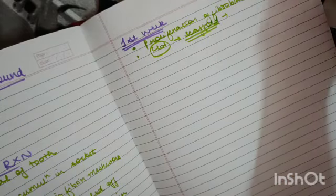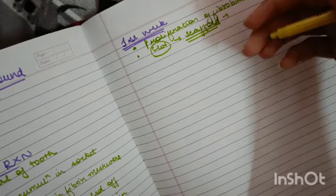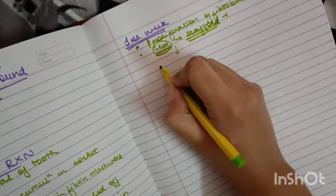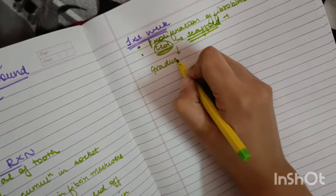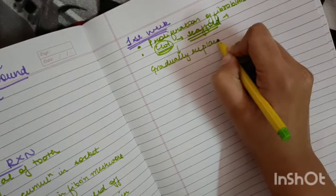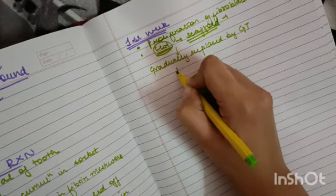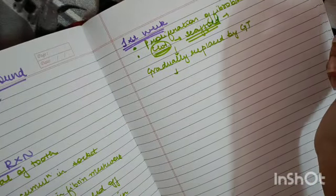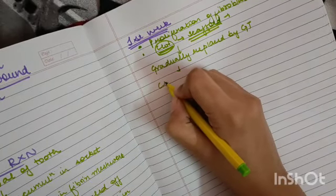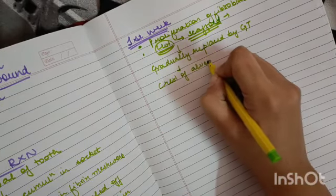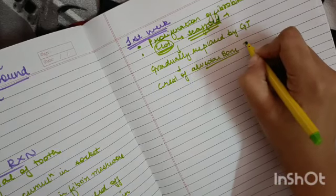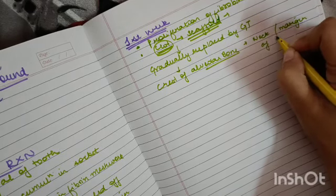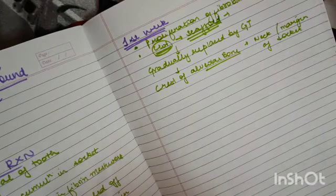The clot will act as a scaffold for the cells that are associated in the healing process. The clot will be gradually replaced by granulation tissue. The crest of the alveolar bone, which makes the margin of the socket, will start showing osteoclastic activity.